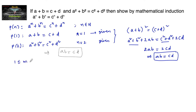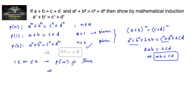Now assume P(m) is true for 1 ≤ m ≤ k. So P(k) is true and P(2) is also true since 2 ≤ k. We now need to prove that P(k+1) is true. The inductive hypothesis gives us P(m) is true for all 1 ≤ m ≤ k, that is P(k) is true.